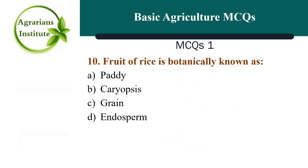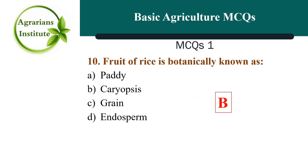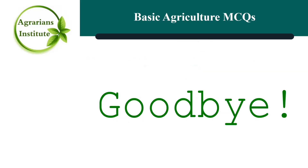Next MCQ: The fruit of rice is botanically known as — the correct answer is B, Caryopsis. The fruit of wheat is also known as Caryopsis. Thank you so much.